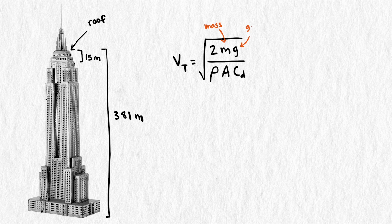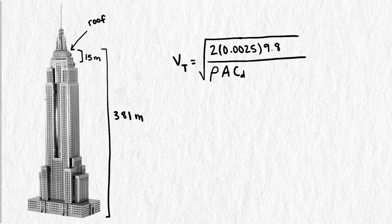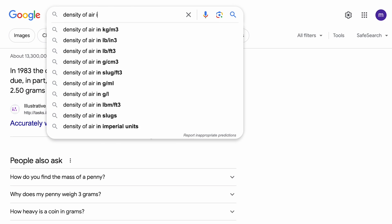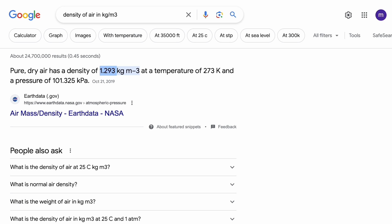We'll need the penny's mass, gravity, air density, cross-sectional area of the penny, and its drag coefficient. Most of these we already know, or we can look up. The mass of our penny is 0.0025 kilograms. Gravity is 9.8 meters per second squared. Air density we can look up. It's 1.293 kilograms per meter cubed.